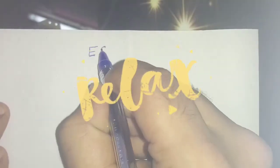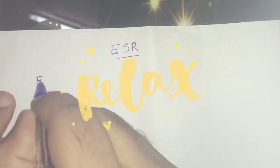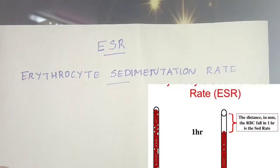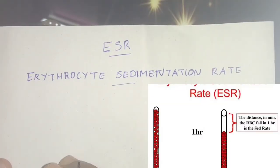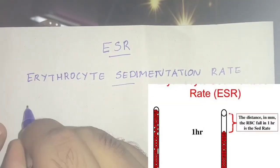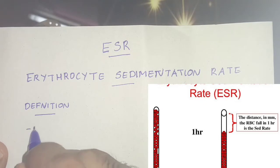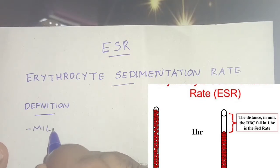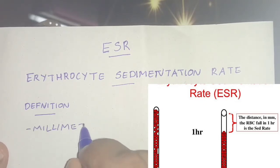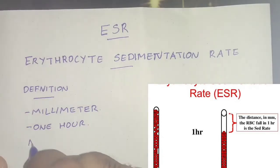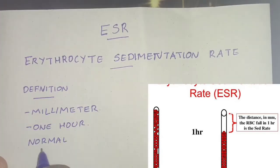Welcome back to YouTube channel PD Bros. Today's topic is ESR — Erythrocyte Sedimentation Rate. The definition is the depth in millimeter of the clear plasma formed at the top of the vertical column of anticoagulated blood kept undisturbed for one hour in a tube of standard dimension.